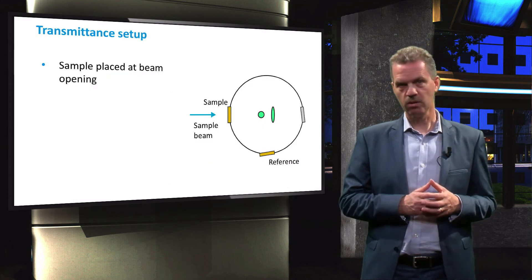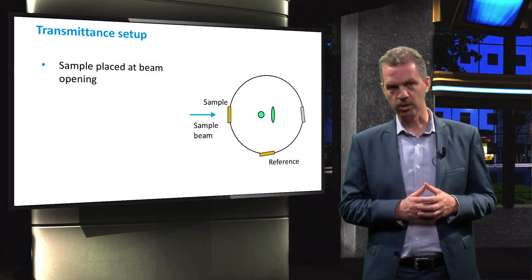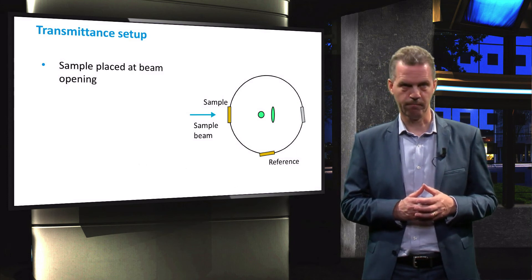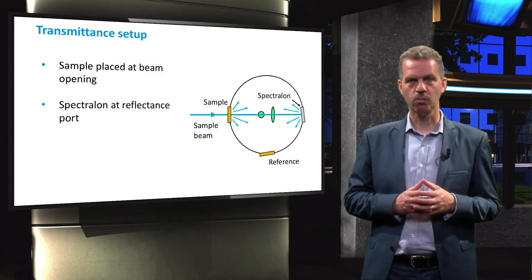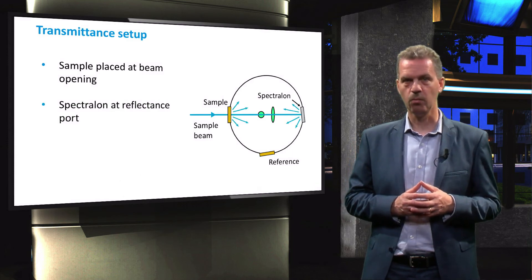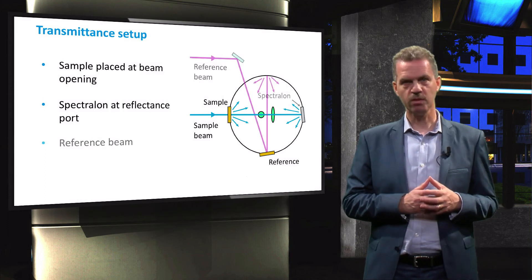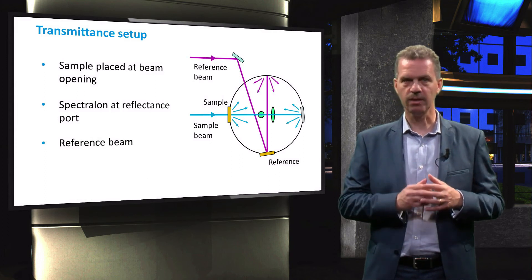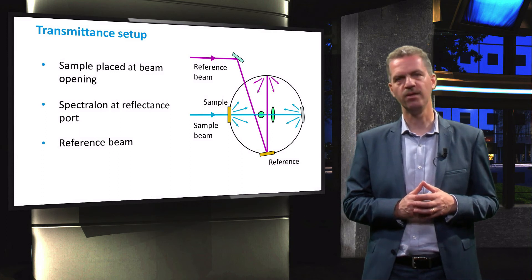When the transmission of a solar cell or material is measured, the sample is placed at the beam opening. The opening for the reflectance measurement will be closed with spectralon. Again, a reference beam is directed into the integrating sphere to correct for the reflectance of the spectralon in the chamber.